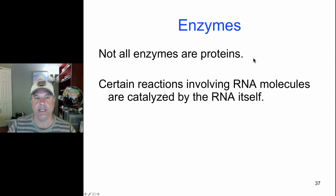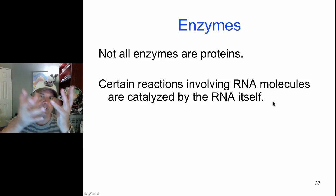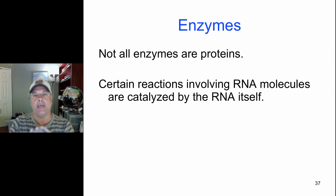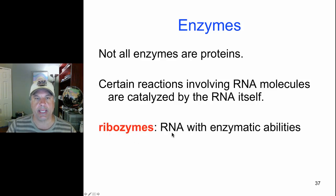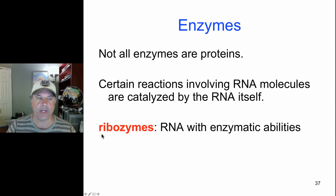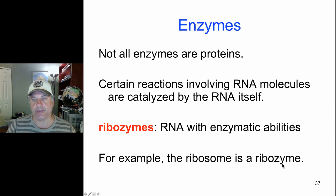Not all enzymes are proteins. RNA — ribonucleic acid — can actually catalyze reactions because RNA is capable of folding into globular shapes like proteins do, and those globular shapes can provide active sites that can catalyze certain biochemical reactions. That wasn't known for a long time — the discoverer won the Nobel Prize. His name is Thomas Cech and he was at the University of Colorado Boulder. We call RNA catalysts — RNAs with catalytic activity — ribozymes. The ribosome is actually a ribozyme because there are catalytic RNAs as part of its structure.